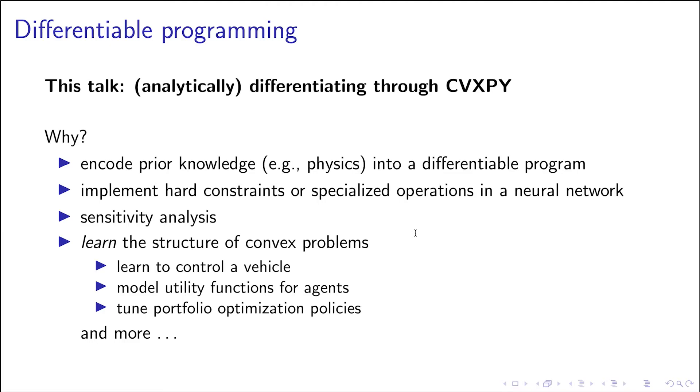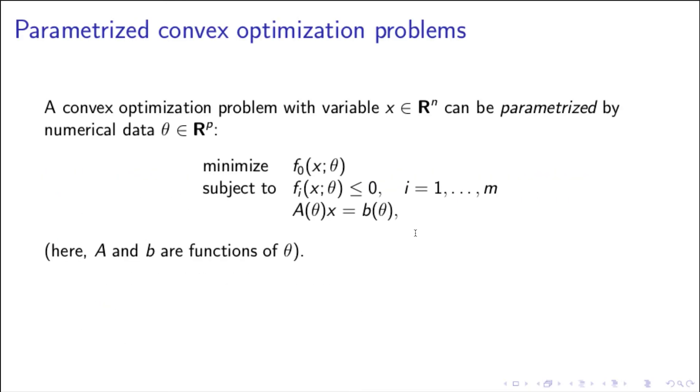So let's talk a bit more about how this works, how we implemented this. First, let's clarify what we mean by a parameterized convex optimization problem. So this is our same standard form for convex optimization problem as before, except we now have this parameter theta, and everything is a function of theta.